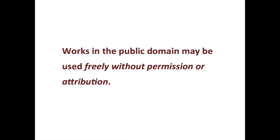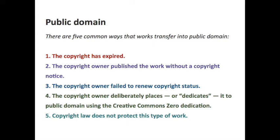There are five common ways that works transfer into the public domain. Number one: copyright has expired. Number two: the copyright owner published the work without a copyright notice — this applies to a specific period of time. Number three: the copyright owner failed to renew copyright status, which also applies to a particular period. Number four: the copyright owner deliberately places or dedicates a piece of content to the public domain using the Creative Commons zero dedication. And number five: copyright law does not protect this type of work.